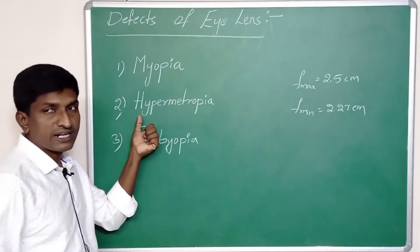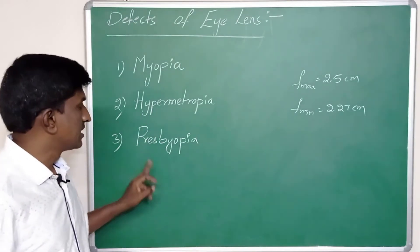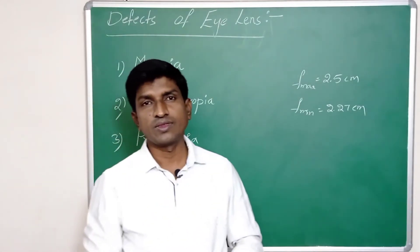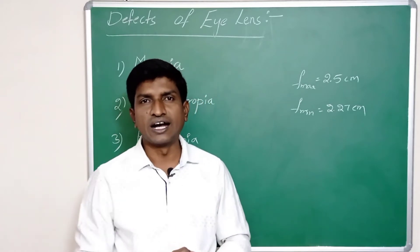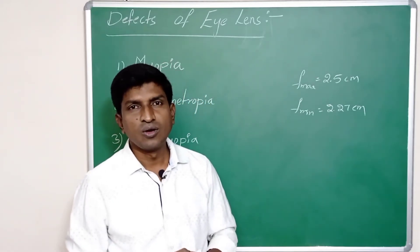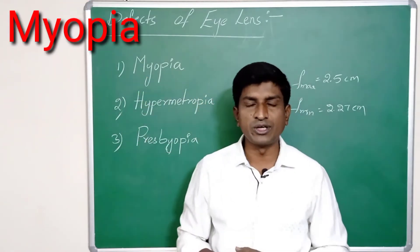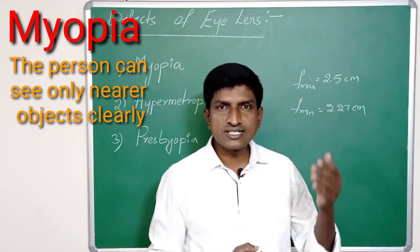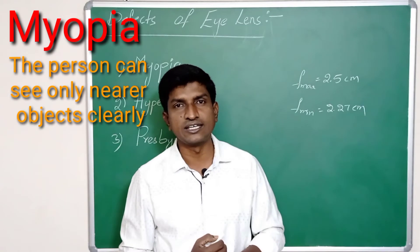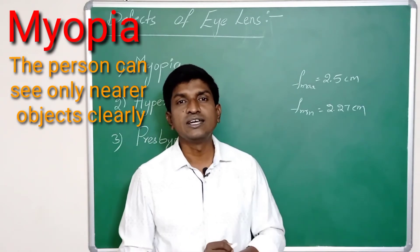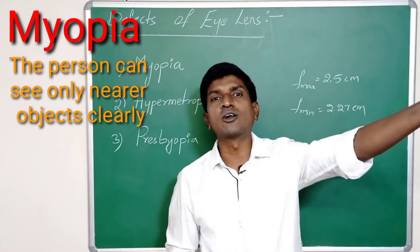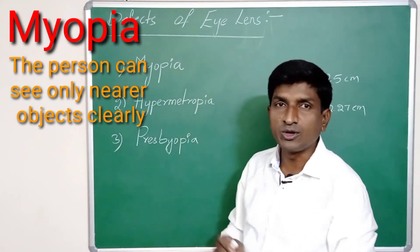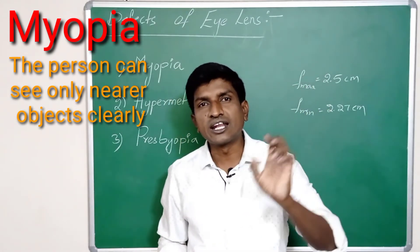These defects are mainly three types: myopia, hypermetropia, and presbyopia. Myopia is an eye defect where the person can see only nearer objects — objects close to the eye — but cannot see objects which are far from them.